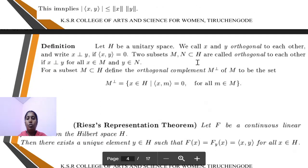Next definition: Orthogonal. In a unitary space H, elements h and y are orthogonal to each other if ⟨h, y⟩ = 0, where m, n are contained in H.